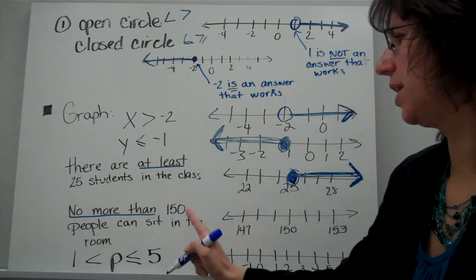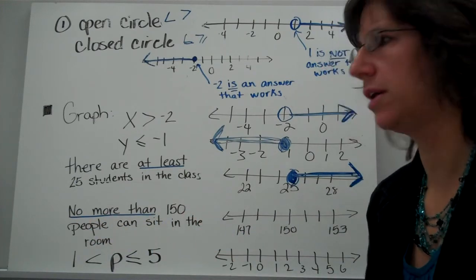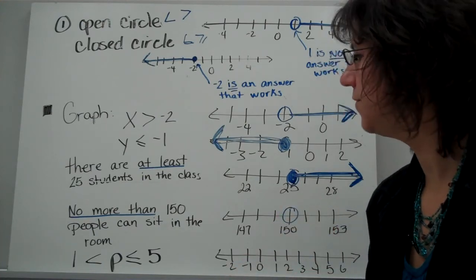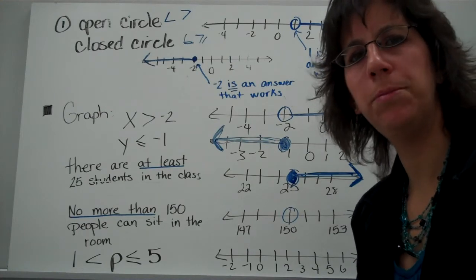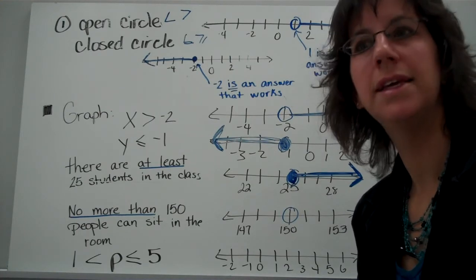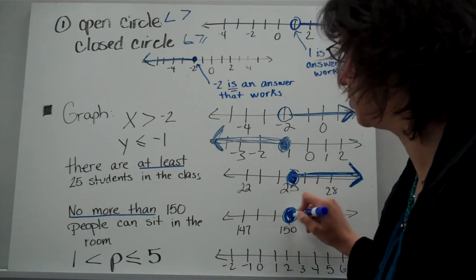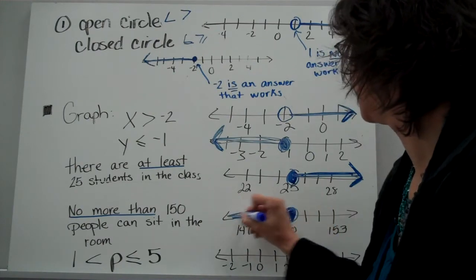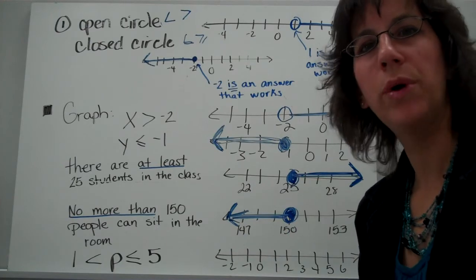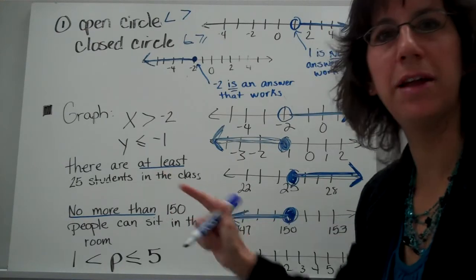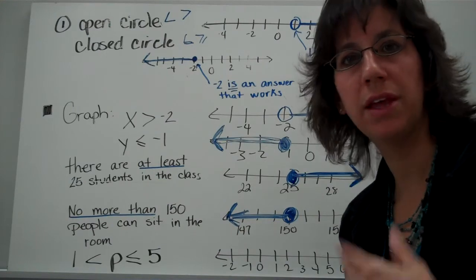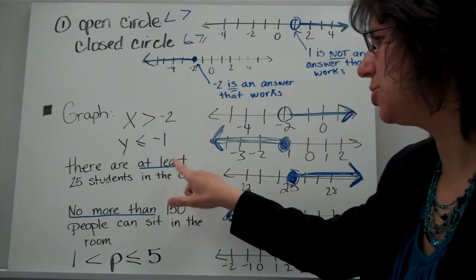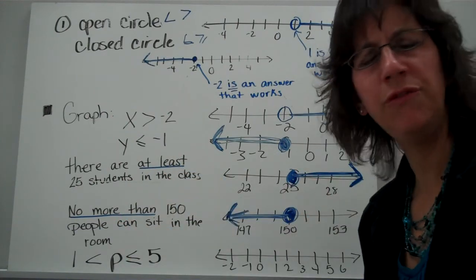'No more than 150 people.' Here's my 150 — do I color it in? 'No more than 150 people can sit in the room.' Does that mean 150 can sit there? Yes, 150 can sit, but no more than that — so all the numbers smaller than 150. Pause the video and check your keyword list in your spiral notebook, and make sure you have 'at least' and 'no more than' matched to the correct symbols.